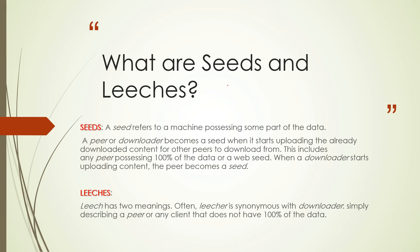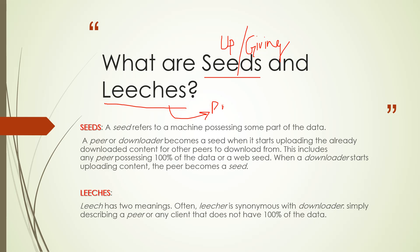What are seeds and leeches in torrent terminology? Seeds are more about giving and leeches are more about taking. All machines that are uploading data or information on the torrent network are considered seeds — they are the giving machines. Leeches are all the machines which are downloading data from the torrent. In most interviews, they will ask what torrents are, how they work, and what seeds and leeches are.